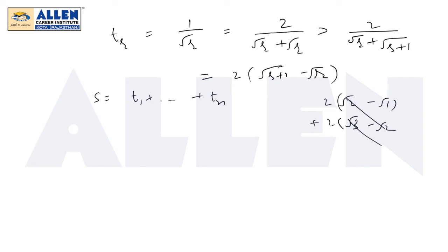So S will be greater than now 2 times... Now here it will be root under n plus 1 minus root 1. Now n is 1599. So basically it will be 1600, root of that is 40. 40 minus 1, that is 39 into 2, it is 78.